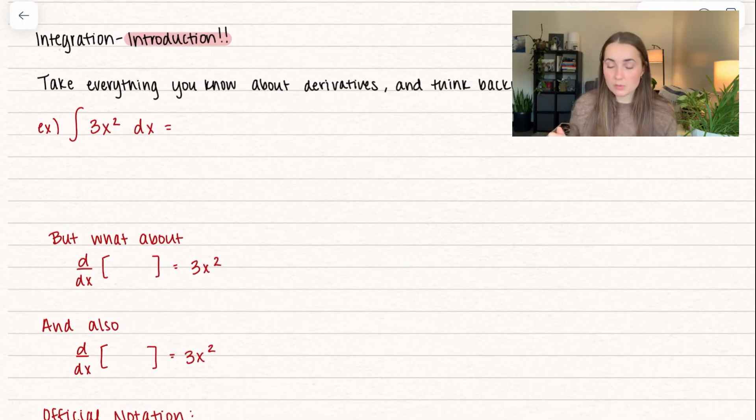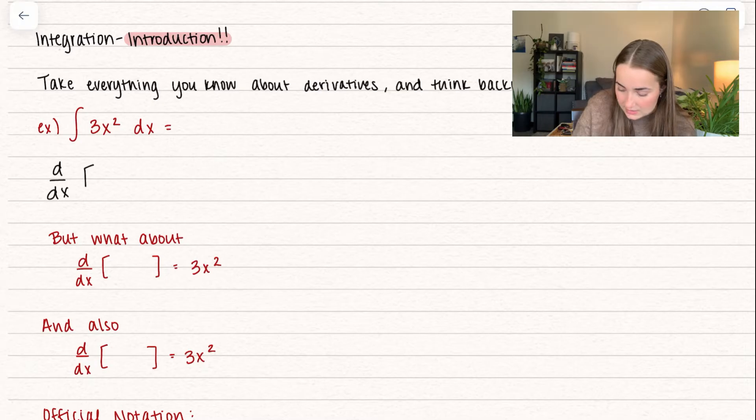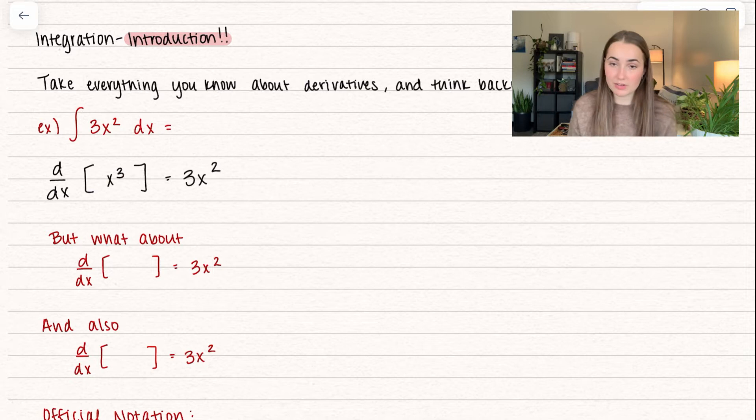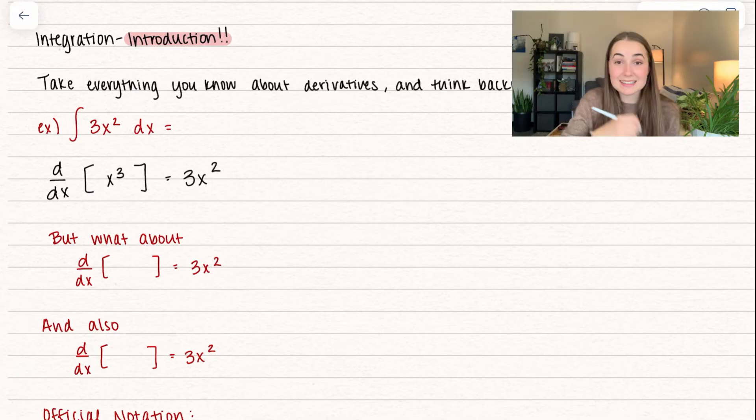So let's go ahead and talk about what this means. I'm going to zoom in a little bit. So really what we're trying to do is we're trying to find something that we take the derivative of that equals 3x squared. So that's what I mean by working backwards. So this is just going to be x cubed, right? The derivative of x to the power of 3, we use power rule and that becomes 3x squared.